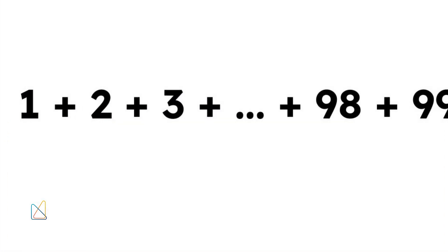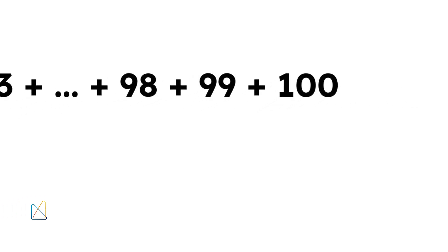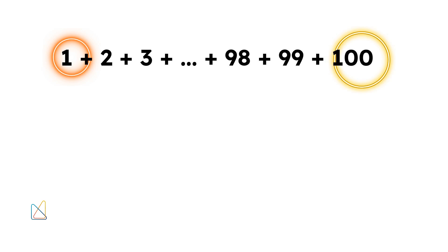The sum we're trying to calculate is 1 plus 2 plus 3 till 100. Gauss paired the numbers from opposite ends of the list. For example, he took the first number, 1, and the last number, 100. He noticed that their sum is 101.